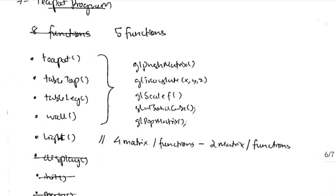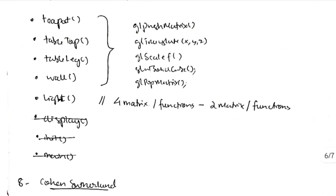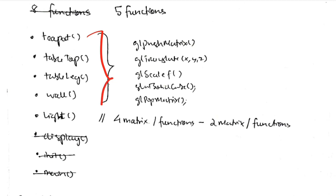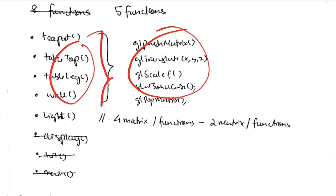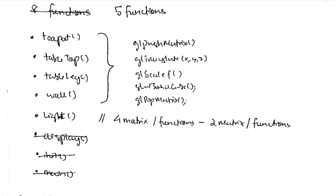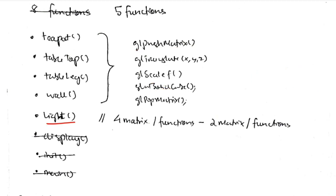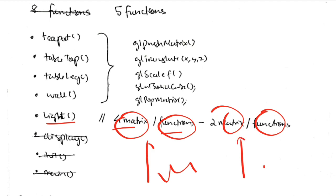For program 7 (Teapot), there are 8 functions: teapot, table_top, table_leg, wall, light, display, init, and main. Three are already covered, leaving five. The first four — teapot, table_top, table_leg, and wall — share a common pattern: gl_push_matrix, then translation, scale, and solid_cube operations, then gl_pop_matrix. The values differ between functions but the structure is identical. The light function defines four matrix values and two material and two light properties.